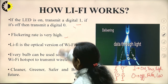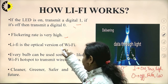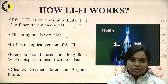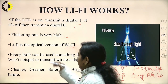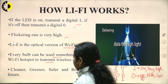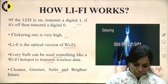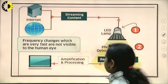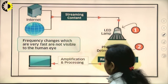The flickering rate is very high, which means the LED flickers at a very high rate. Li-Fi is the optical version of Wi-Fi — in Wi-Fi, radio radiations travel between devices, whereas in Li-Fi, light travels between different devices. Every bulb can be used like a Wi-Fi hotspot to transmit wireless data, making it a cleaner, greener, safer, and brighter future. This is the basic architecture or block diagram of how data will be transmitted using Li-Fi technology.